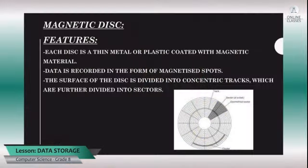Under magnetic disk: magnetic disk is made up of thin metal or plastic with a magnetic coating. Contents are written in the form of 0s and 1s as magnetized spots. The magnetic disk is divided into different concentric tracks, and further divided into different sectors.